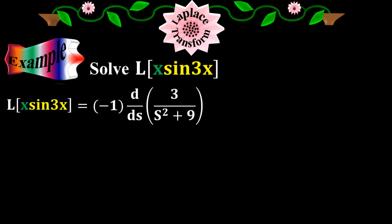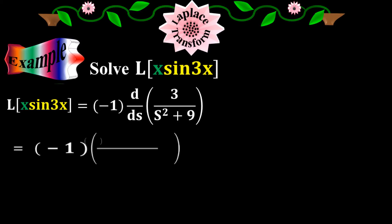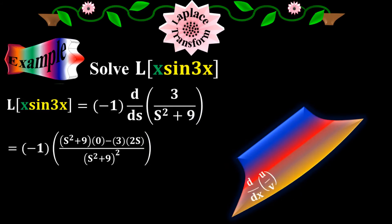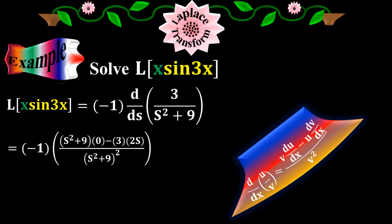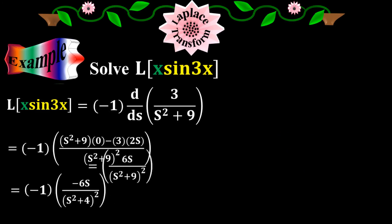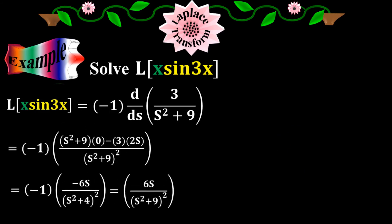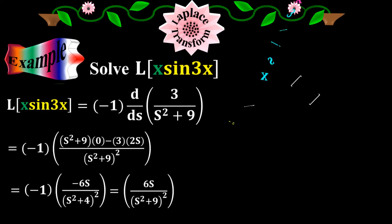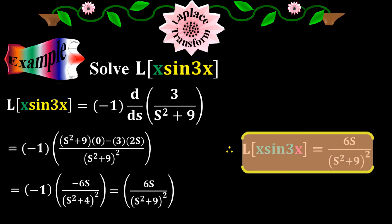The derivative of 3 over s squared plus 9 with respect to s equals (s squared plus 9) times 0 minus 3 times 2s, all over (s squared plus 9) squared. Applying the quotient rule — d/ds of u/v equals (v·du/ds minus u·dv/ds) over v squared — and simplifying, this equals 6s over (s squared plus 9) squared. Therefore, Laplace of x times sine 3x equals 6s over (s squared plus 9) squared.